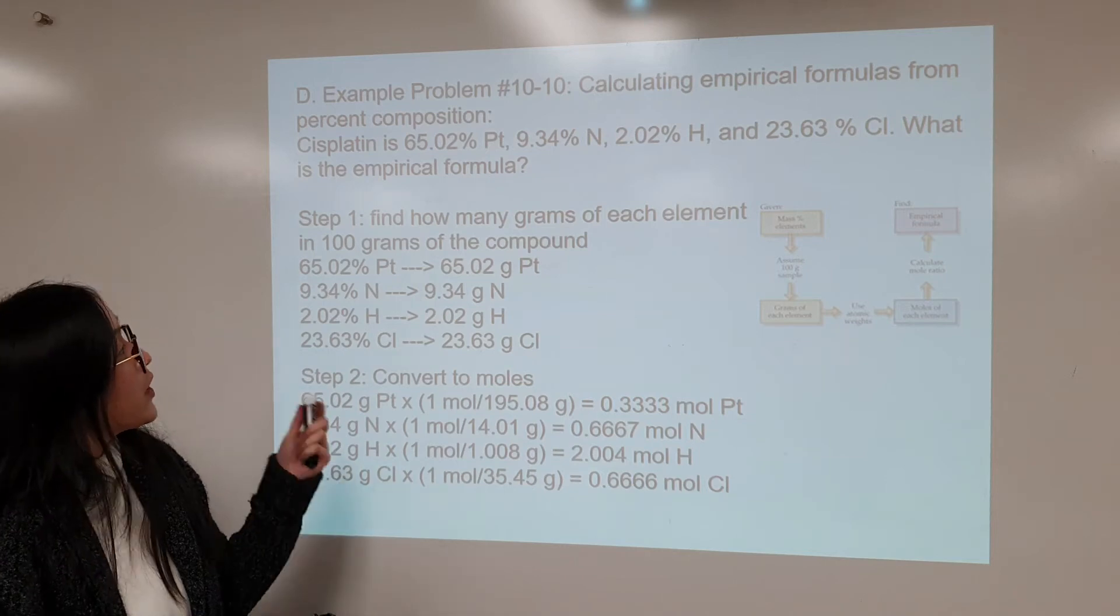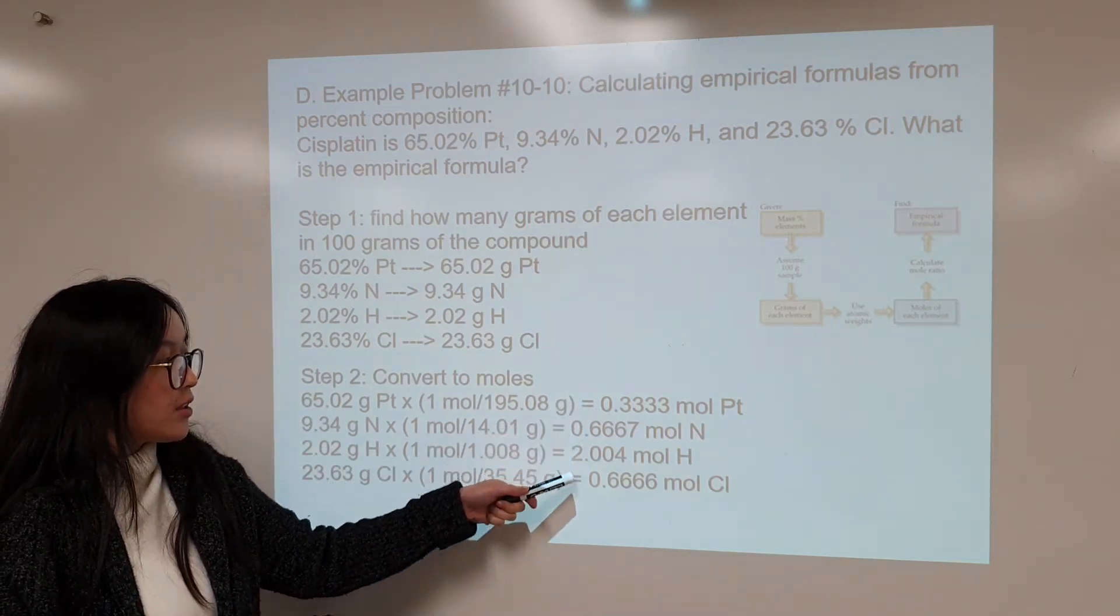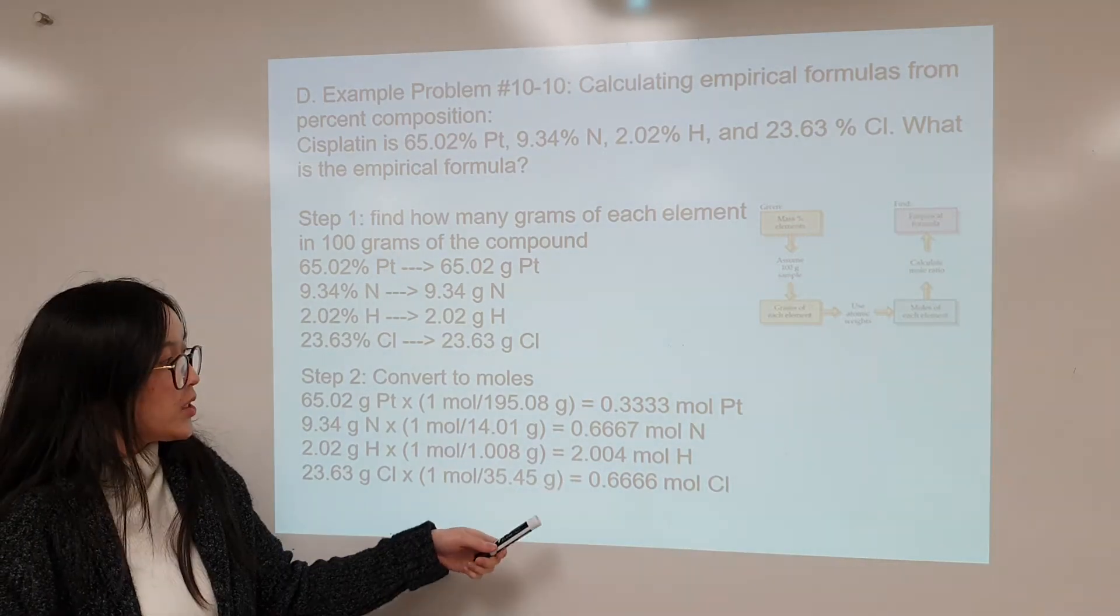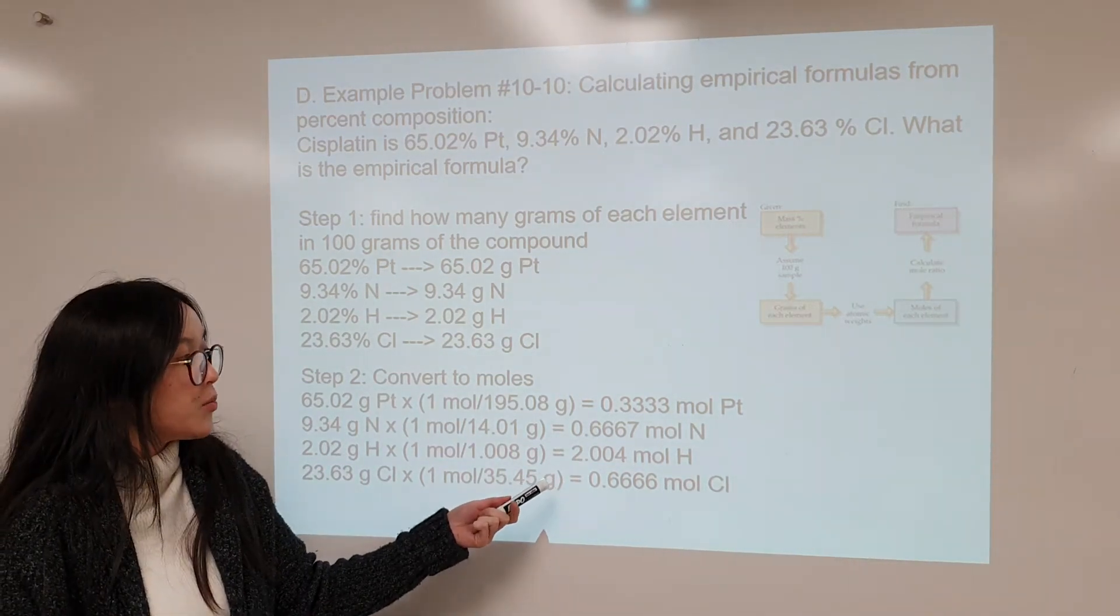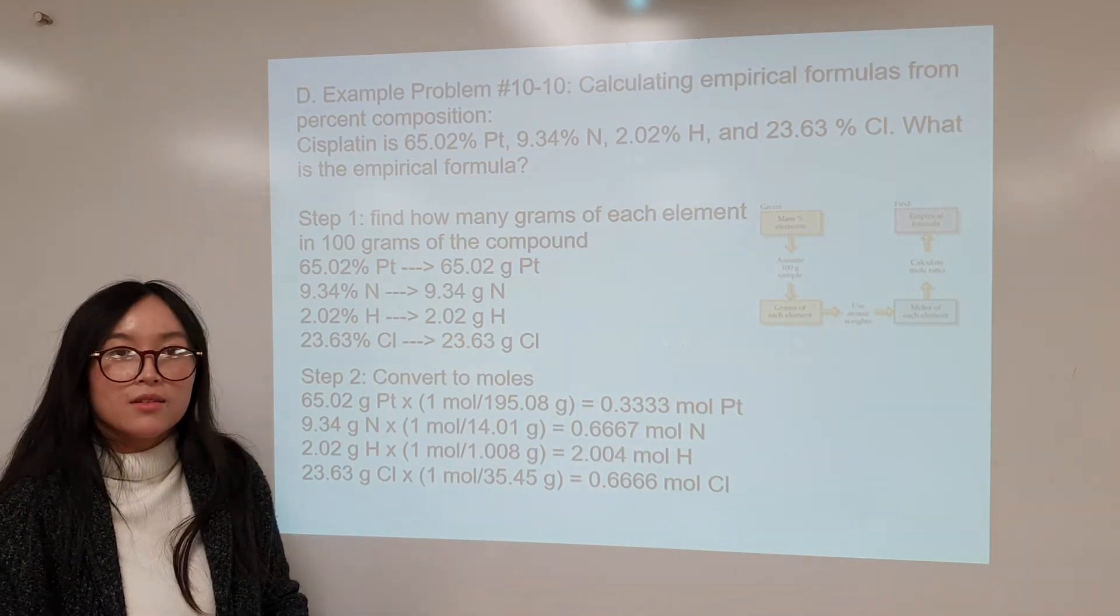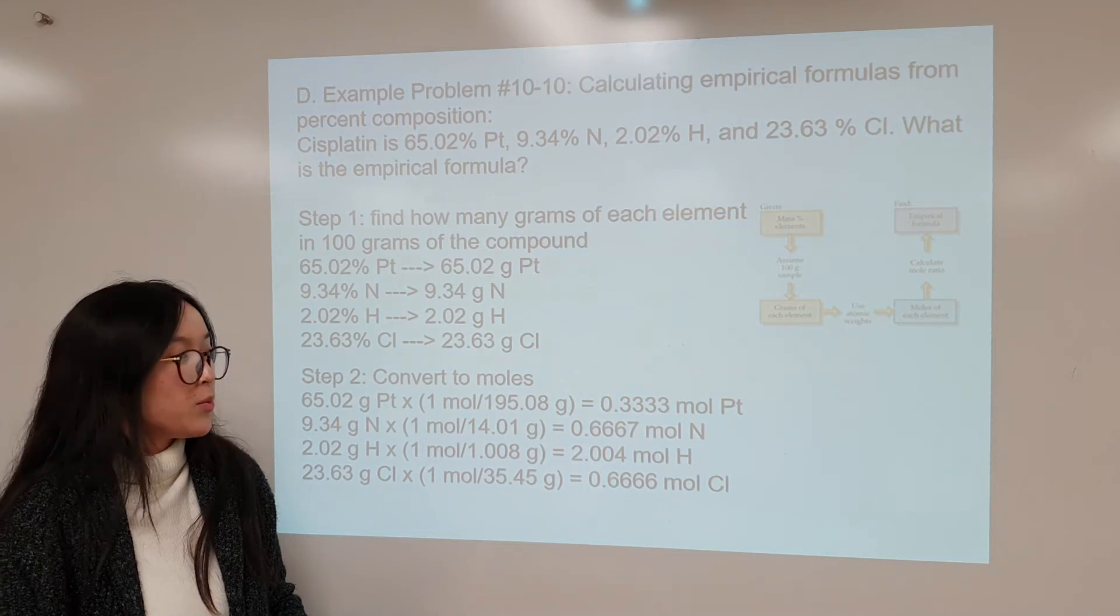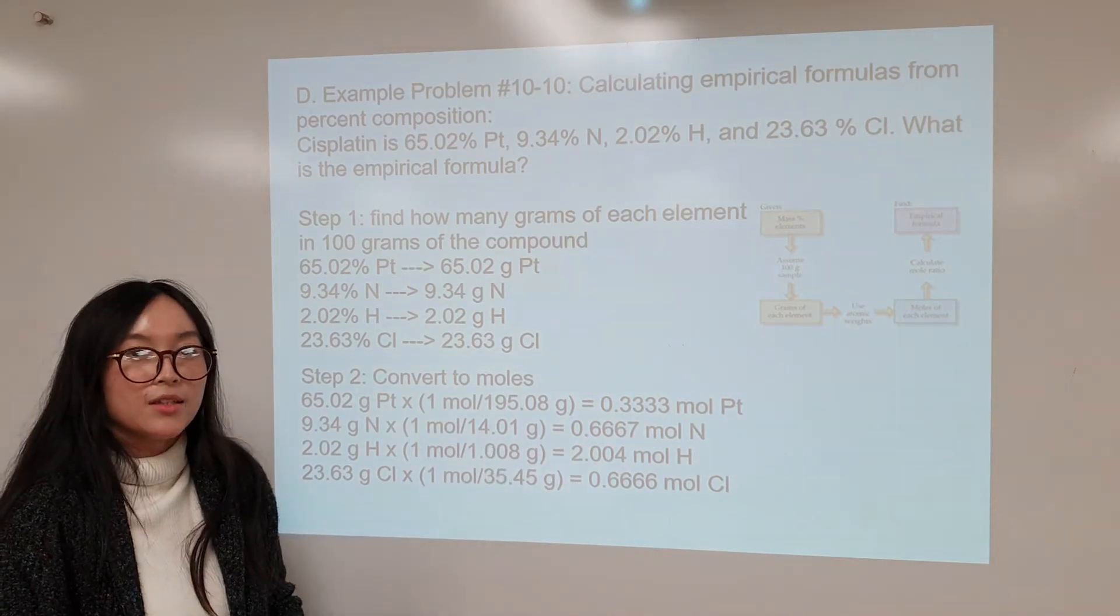And now we will continue on trying to define our empirical formula. So out of all four values of the moles, which one is the smallest value of the moles? Comparing all four, which one's the smallest? Take your time now and maybe choose and think about which one has the smallest value between the four elements given.